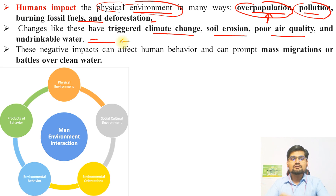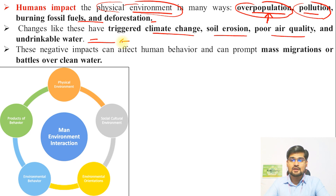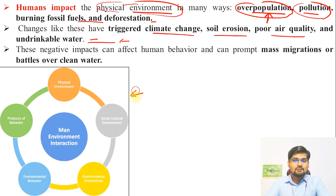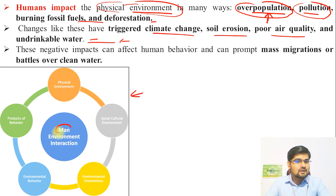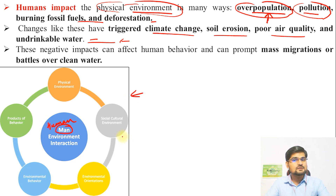Now when we talk about the negative impacts of human behavior, these can also prompt mass migrations, as we have seen historically — migrations of people from one region to another. If you look at this flow diagram, it tries to summarize the influences of man–environment interaction. But remember, when you draw a flow diagram like this, always write 'human' — I always specify this to my students.